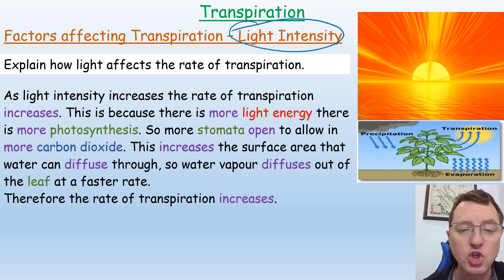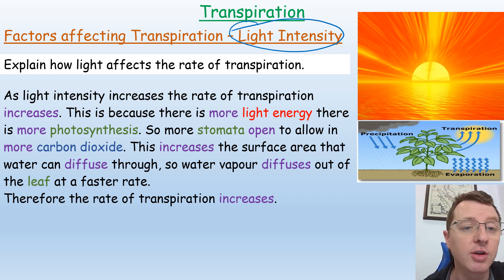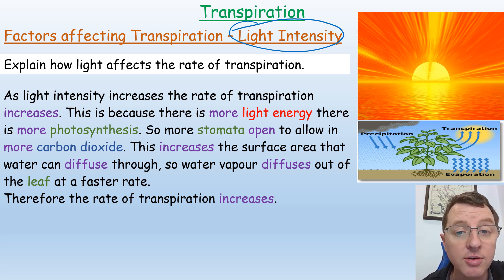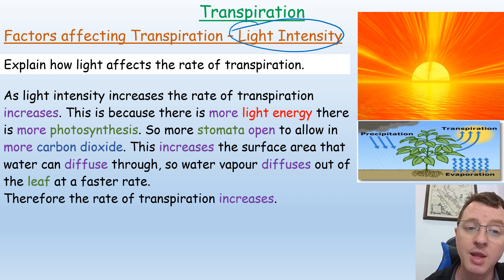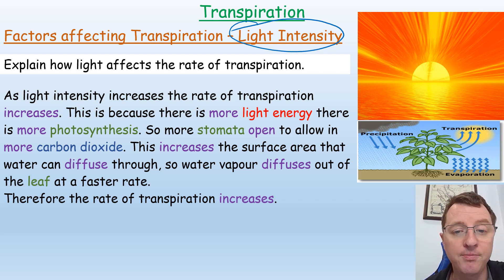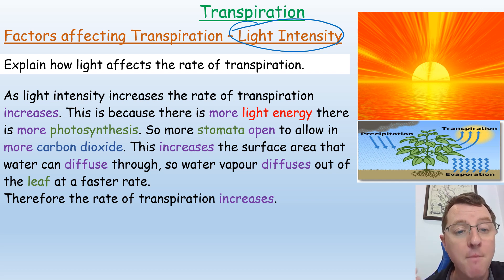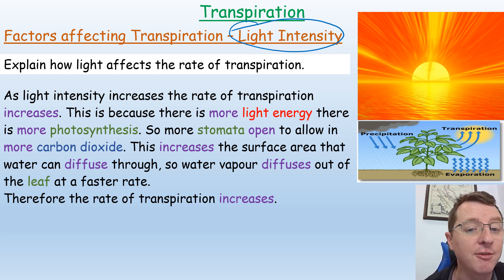You can use the potometer to investigate how different factors affect transpiration — for example, light intensity. Place a lamp a certain distance away from the plant's leaves, then move it further away to decrease the light intensity and measure how the rate changes. As light intensity increases, the rate of transpiration increases. This is because more light energy means more photosynthesis, so more stomata open to allow more carbon dioxide in. This increases the surface area through which water can diffuse, so more water diffuses out and transpiration occurs at a faster rate.